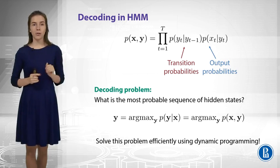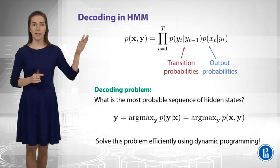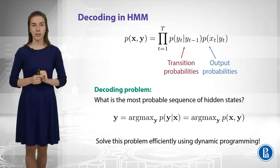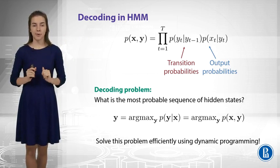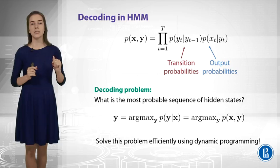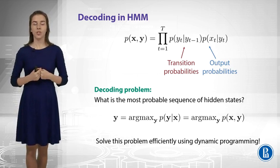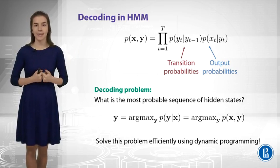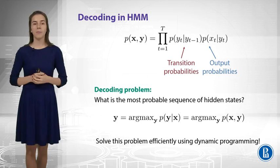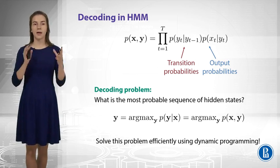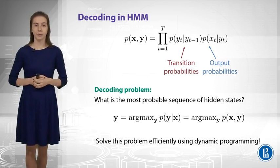Before we go to it, I just want to recap the main formula for hidden Markov model. Please remember that we have the probabilities of y given the previous y, which are called transition probabilities, and then we have output probabilities, and we multiply them by the positions to get our total probability of both variables.